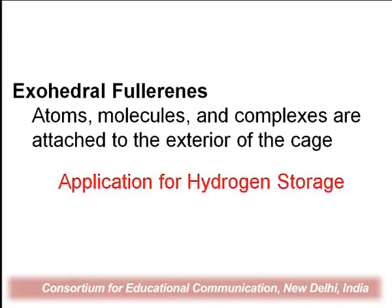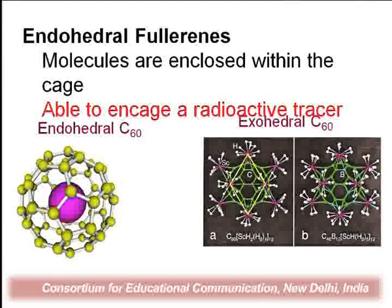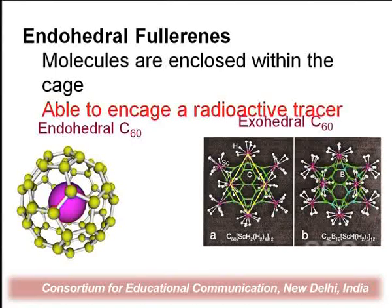Here we define different types of fullerenes. The first is exohedral, meaning atoms, molecules, and complexes are attached to the exterior of the cage — when some molecules are attached to the outside of the fullerene. Its application is for hydrogen storage. In the diagram on the right-hand side, the exohedral C60 shows the buckyball with other molecules attached at the outer side, used for storage of hydrogen atoms.